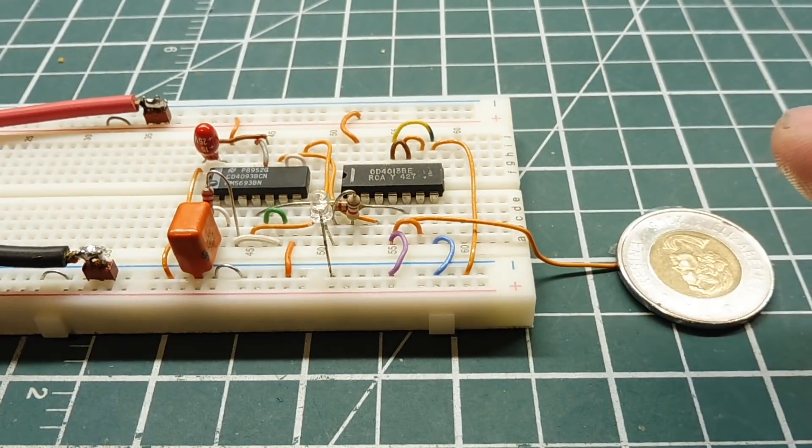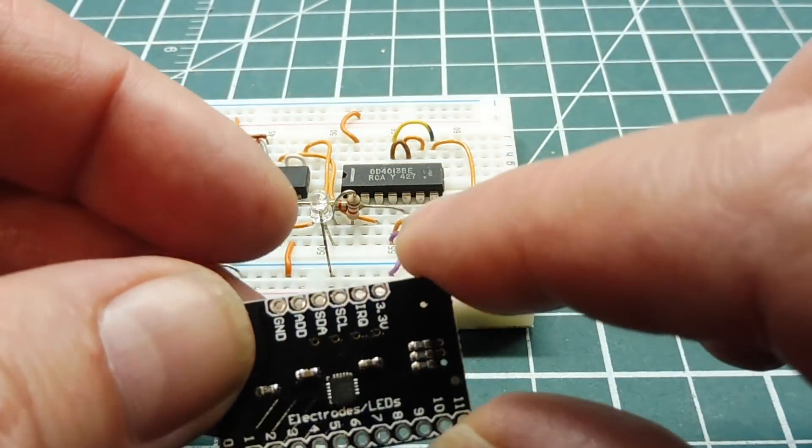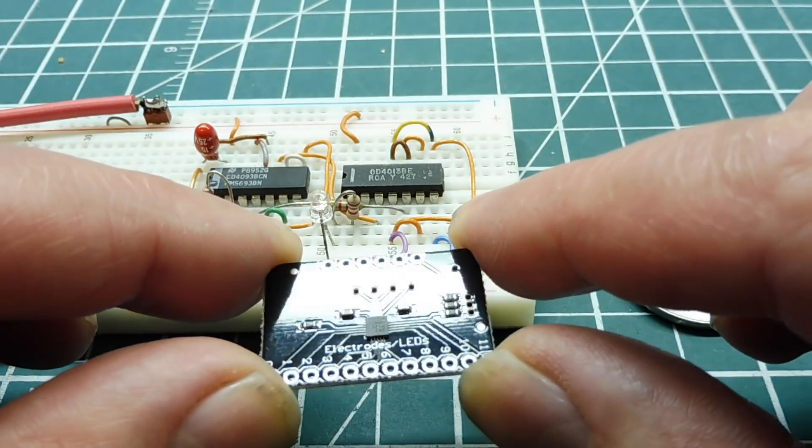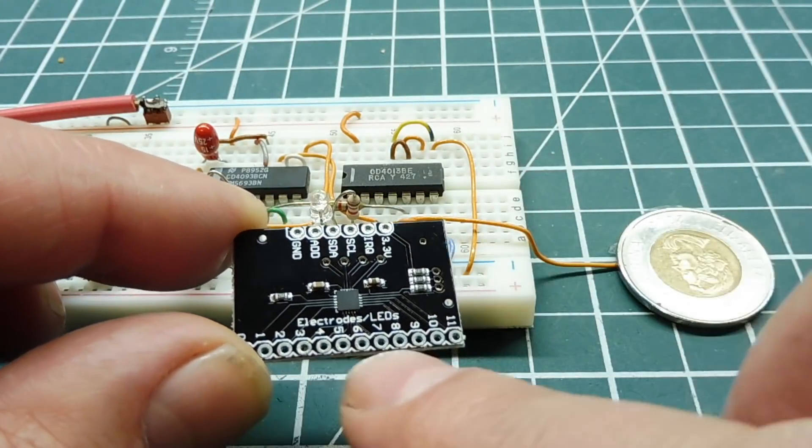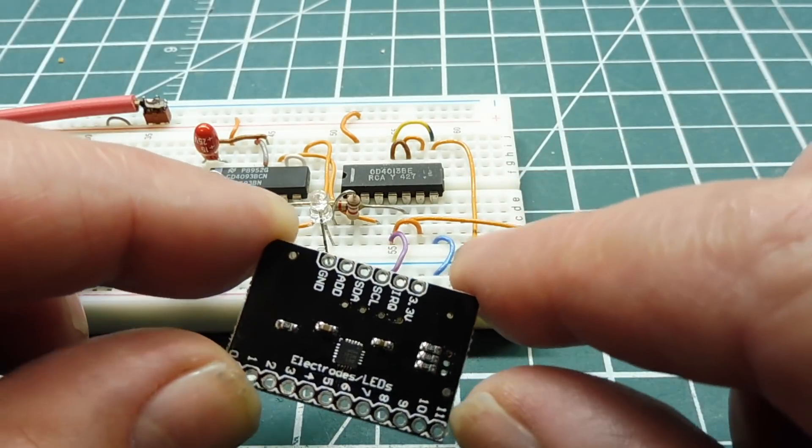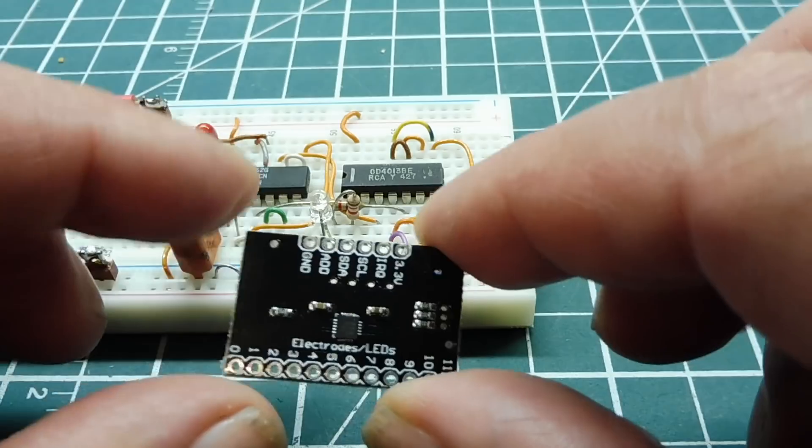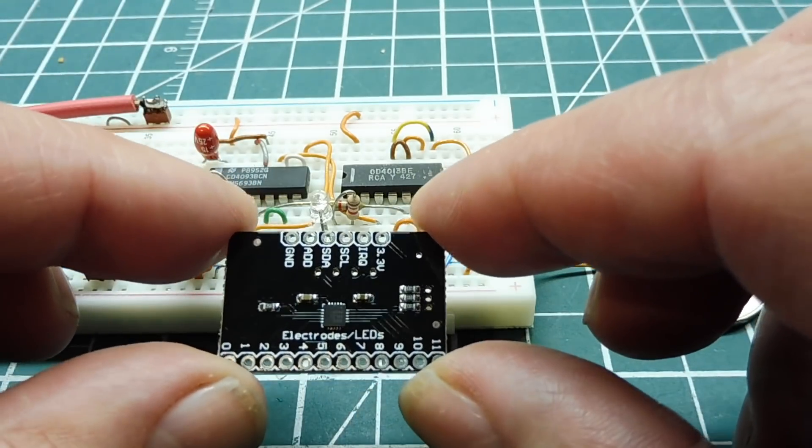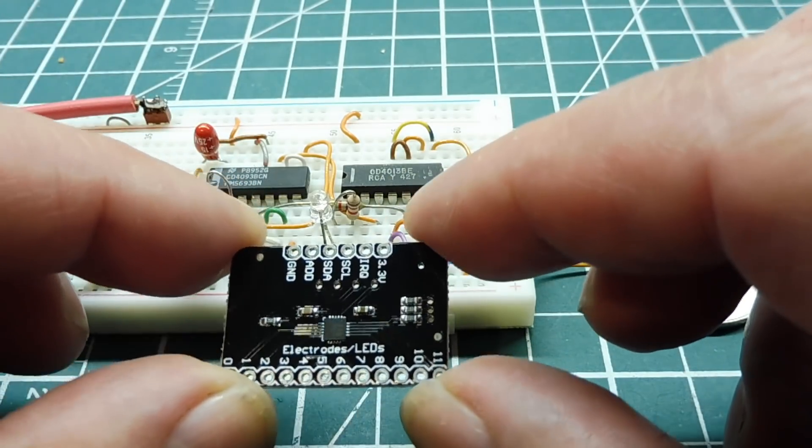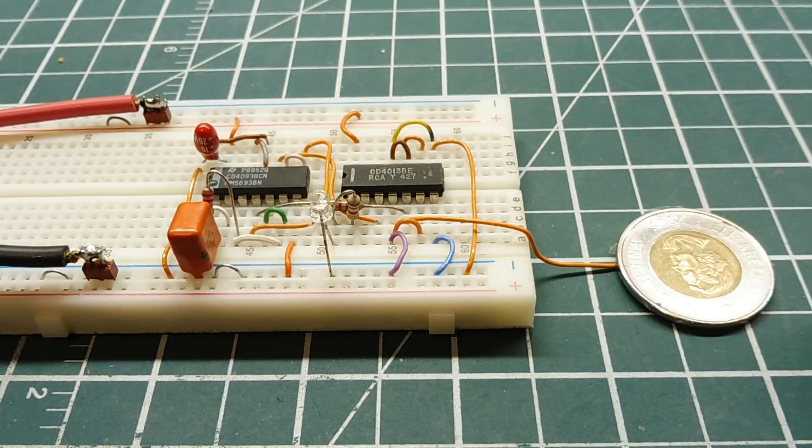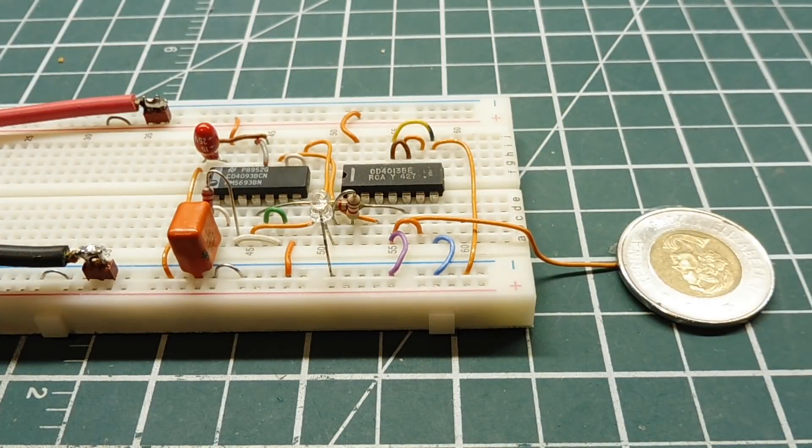Now there are ICs that are designed to do this same function. Here's a breakout board for the MPR-121, and you could have up to 12 sensors, but you need a microcontroller, so it runs on the I2C bus. You need like an Arduino Nano or Uno to run this board, but in this video, we're going to build a discrete capacitive touch switch, and I'm using the 4000 series CMOS ICs.